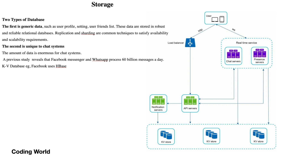For storage, there are two types of databases to consider. First, a generic database for user profiles, settings, and user friends lists — this data can be stored in robust relational databases which can be scaled by sharding and replication techniques. Second, data unique to the chat system, where the amount of data is enormous. Previous studies reveal that Facebook Messenger and WhatsApp process 60 billion messages per day. For this, key-value databases are used — Facebook uses HBase.